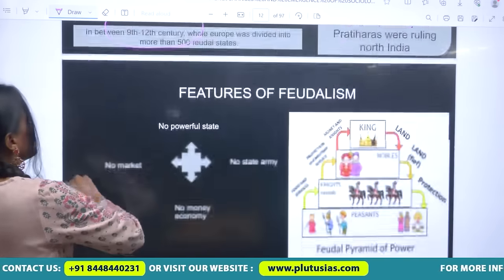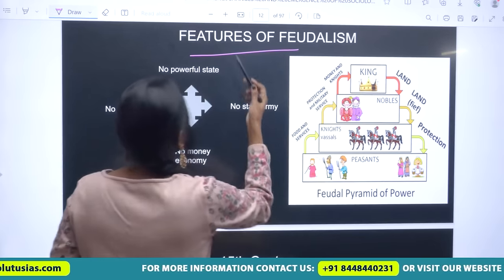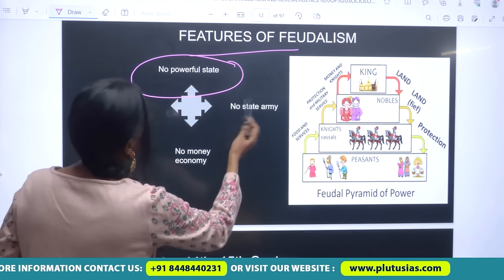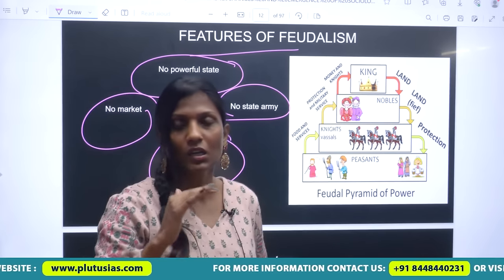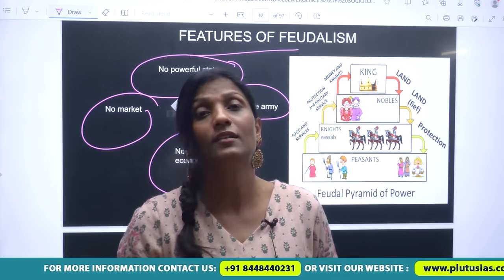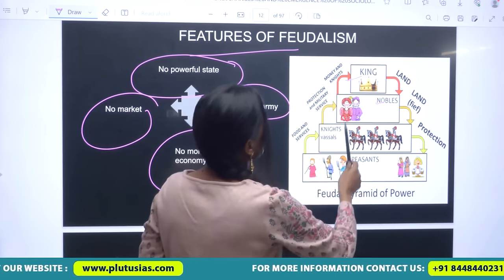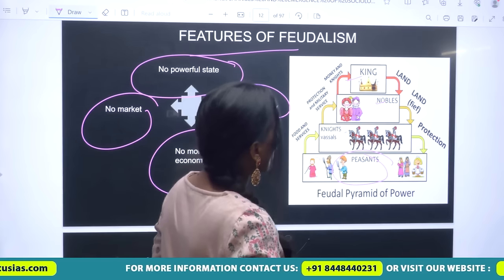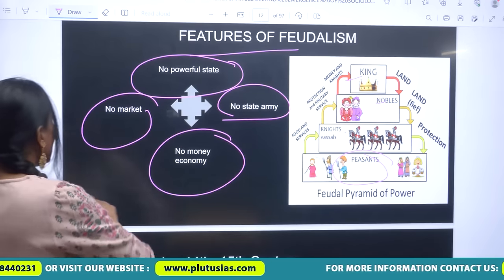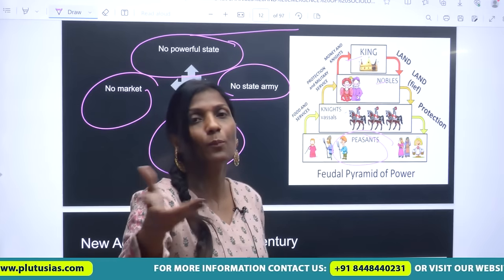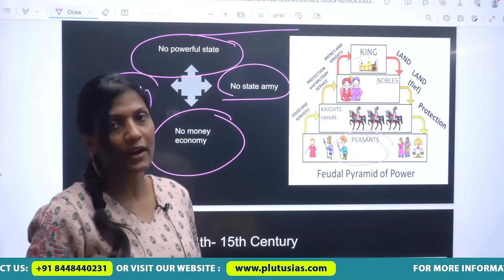Now let's talk about feudalism. In feudalism, there was no powerful state, no state army, no money economy, no market. The power of kings was not dominant. The hierarchy consisted of kings, nobles, knights, and peasants. Feudal lords used to maintain armies for the protection of their land, and whenever the king used to fight, he took help of feudal lords because they had the army. This is how feudalism became a very dominant factor during that point of time.